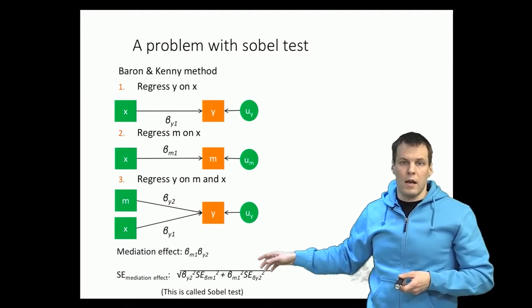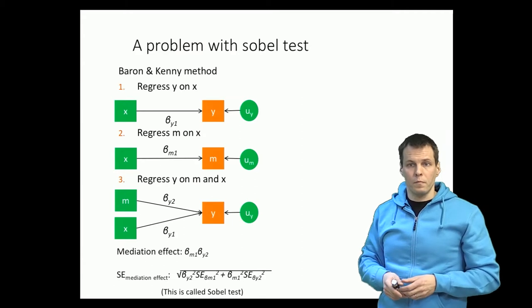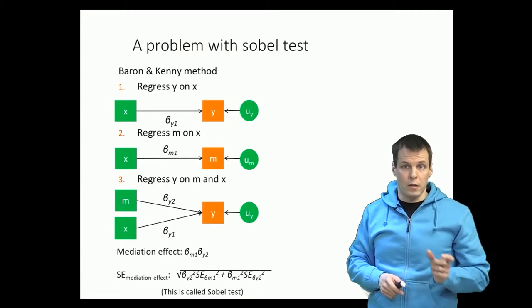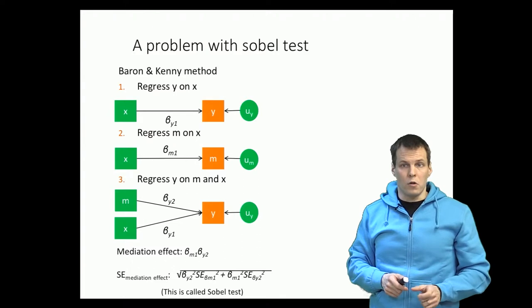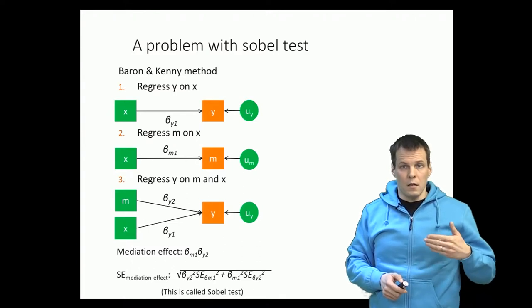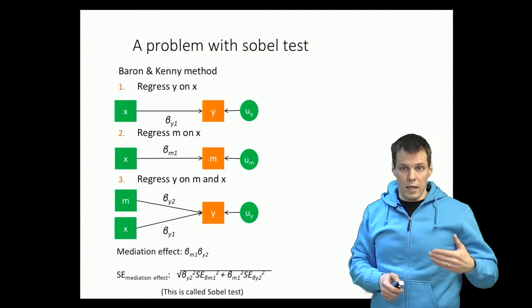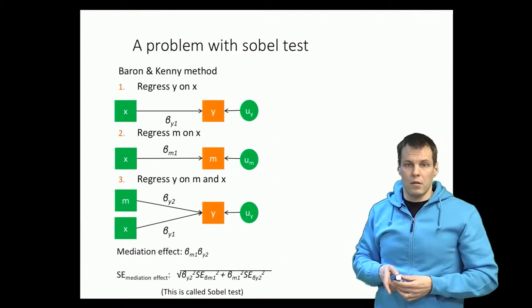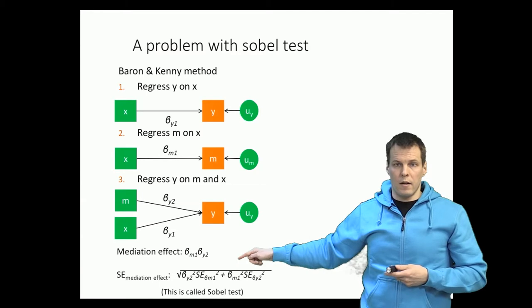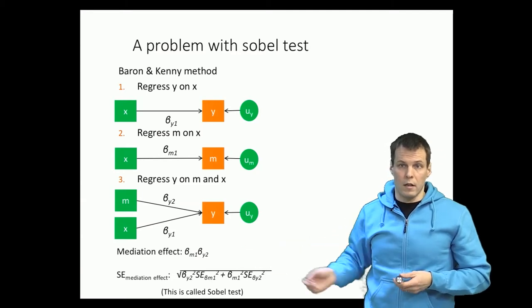That gives us a way of assessing how precise our mediation effect estimate is and also test whether that is zero or not in the population. So it allows us to calculate the t statistic by dividing the mediation effect with this standard error and then we compare that against the t distribution.